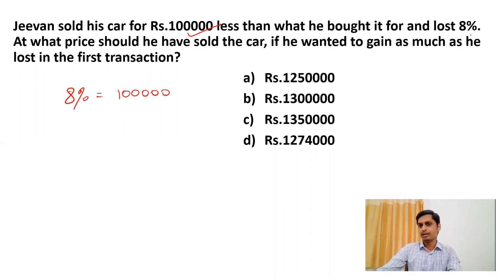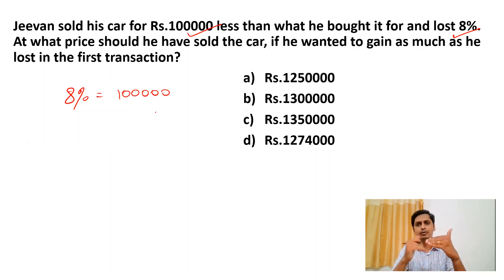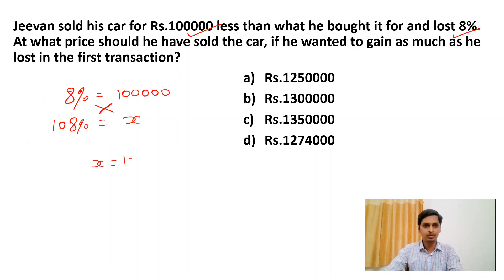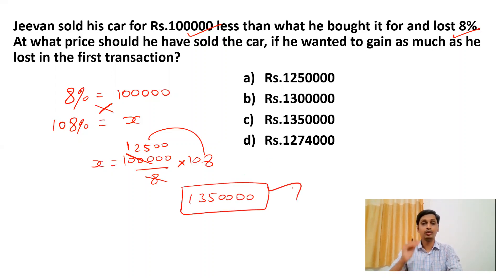He lost 1 lakh which is equivalent to 8 percent. The question asks at what price he should sell to gain as much as he lost. From cost price of 100 percent, he lost 8 percent, so he needs to gain another 8 percent — meaning he must sell at 108 percent. Using cross multiplication: x = (1 lakh / 8) × 108. Solving: 125 × 108 = 13,500, giving us 13.5 lakh, i.e., 13 lakh 50 thousand. This is our answer — selling at this price gives the same 8 percent profit.